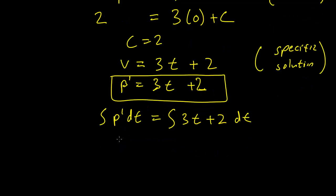The integral of the first derivative is just the function itself, since integration and differentiation are inverses. And we have to take this integral, and this is going to be 3t squared over 2 plus 2t plus c. I'm going to label this c2, just to avoid confusion with the other constant.